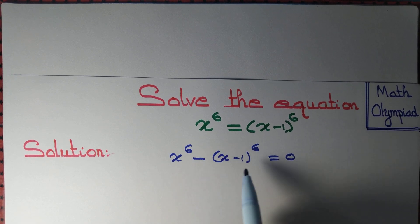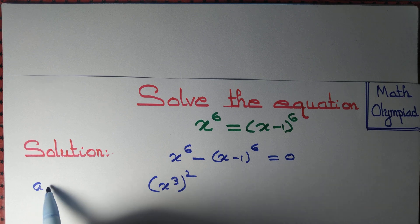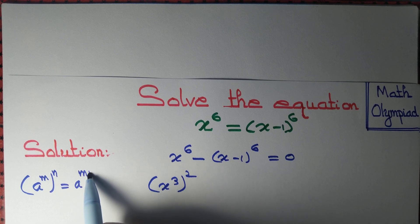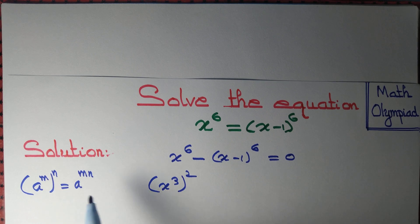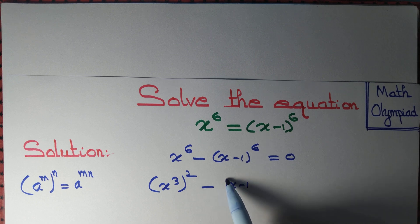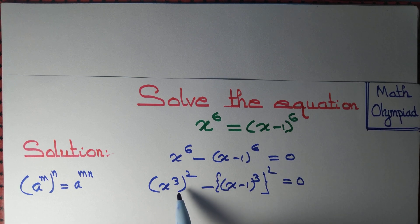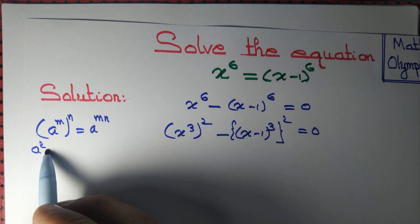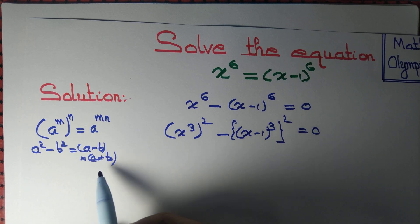Now you see that this can further be written as x cube whole thing squared. We know that a to the power m, whole thing to the power n, equal to a to the power mn. So we simply use this law of indices, where m equal to 3 and n equal to 2. Similarly, x minus 1 to the power 6 can be written as x minus 1 cube, whole thing squared. Now you see that it is of the type a squared minus b squared, and we know the formula that a squared minus b squared equal to a minus b whole thing into a plus b. Let us apply that formula.